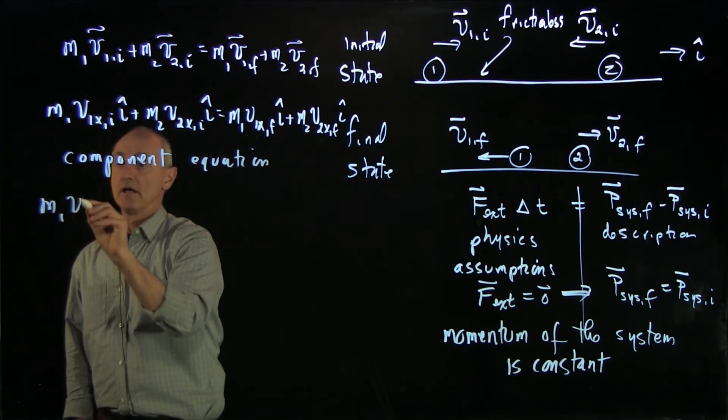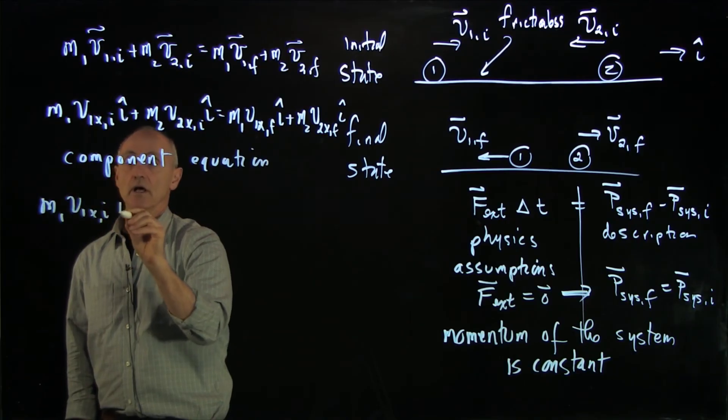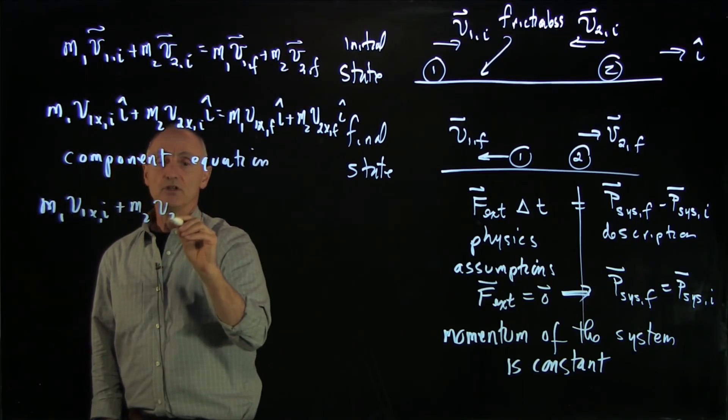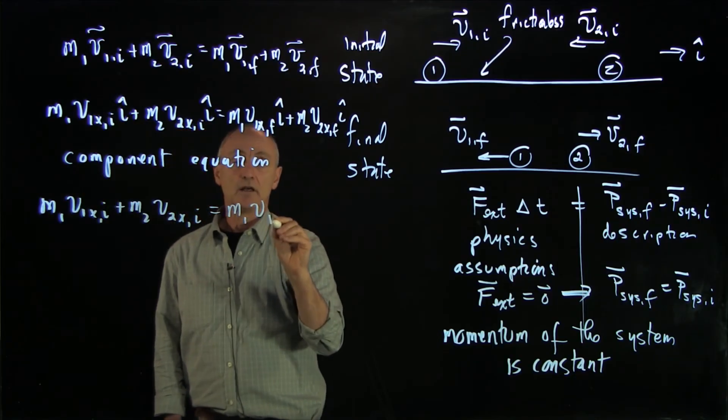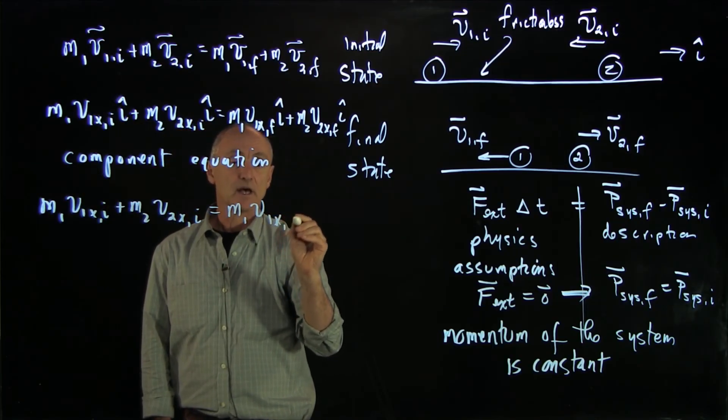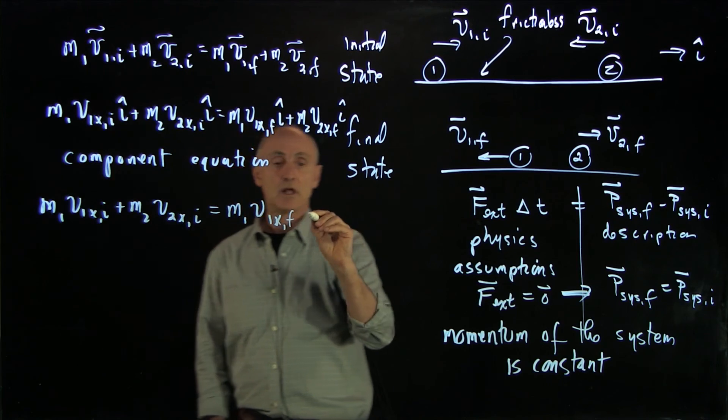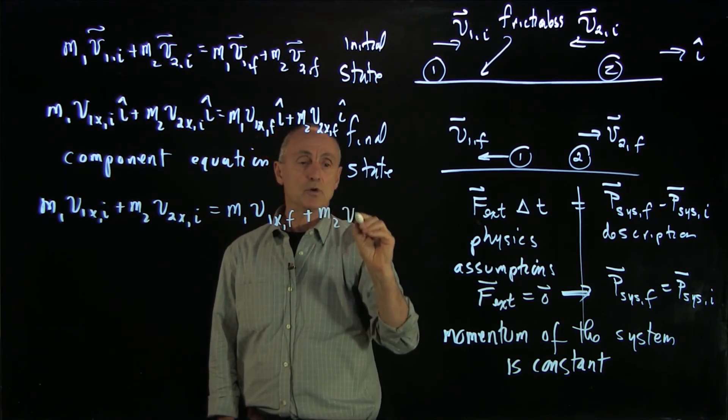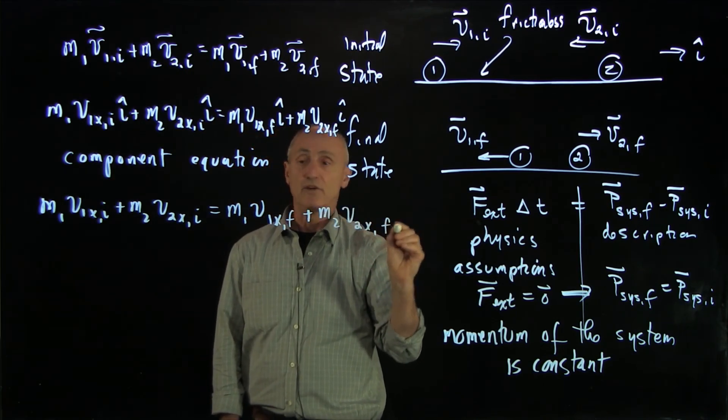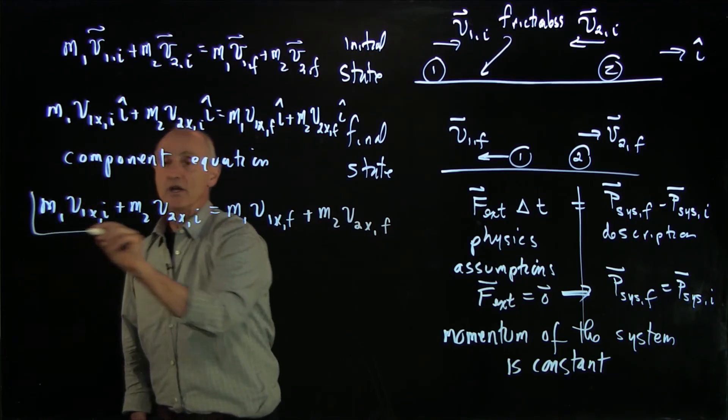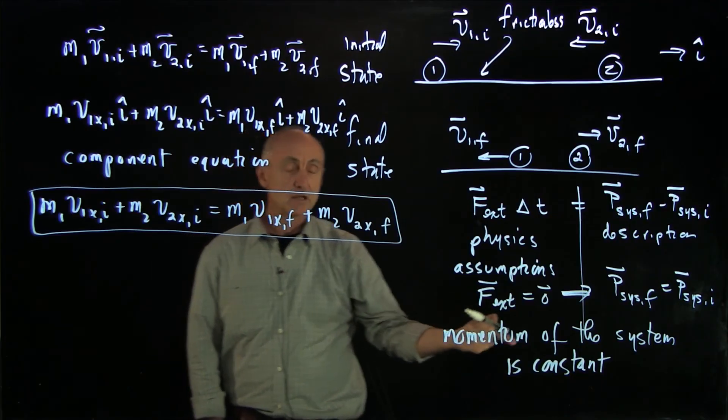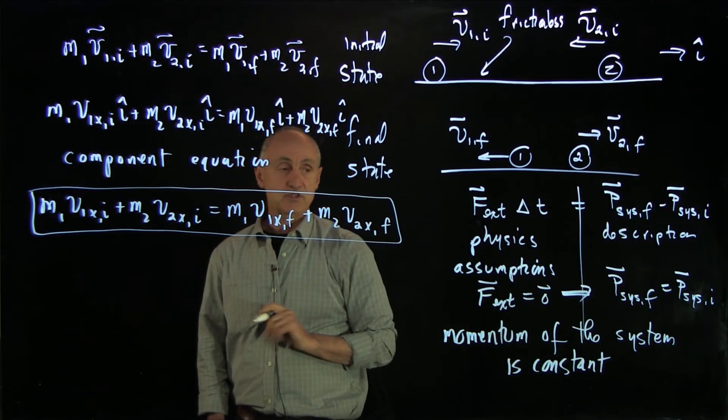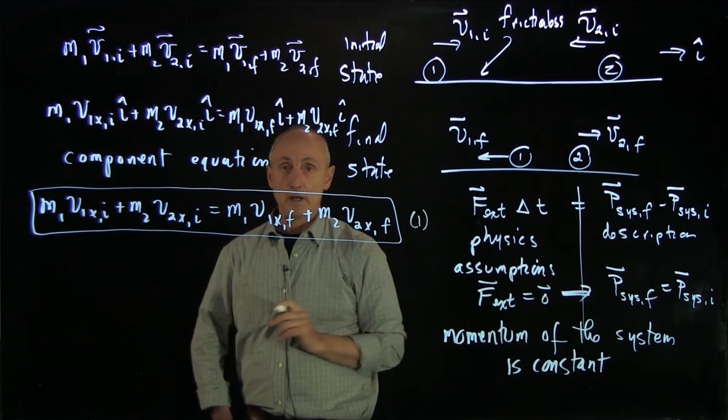And when we write this equation in terms of components, we have m1 v1 x initial plus m2 v2 x initial equals m1 v1 x final plus m2 v2 x final. And this equation here is the equation that we'll use to express the constancy of the momentum of the system. We'll call this equation 1.